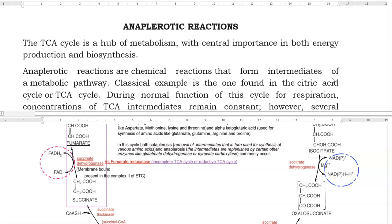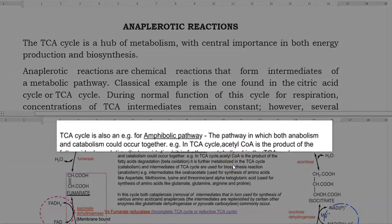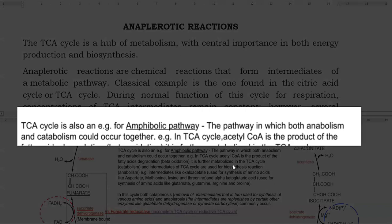This could be best explained in the TCA cycle. The TCA cycle can be referred as a hub of metabolism as it plays a central role in both energy generation as well as biosynthesis. For this reason, TCA cycle is referred as an amphibolic pathway. That is a pathway in which both anabolism and catabolism could occur together.